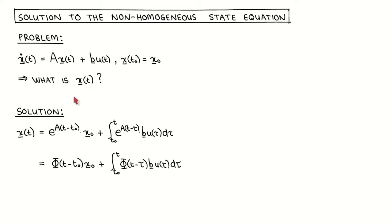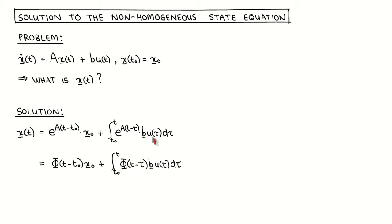It can be shown that the solution is given by this equation, where the matrix exponential function of A times (t minus t0) is multiplied with the initial state vector for the first term, and for the second term we calculate the integral from t0 to t of the matrix exponential of A times (t minus tau), times the vector B times the input signal u. The integrand will be a vector, and the meaning of the integral of a vector is that we apply the integral to each of the elements of the vector.